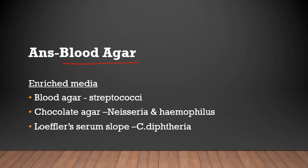Examples of enriched media are Blood agar, Chocolate agar, and Loffler's Serum Slope. Blood agar is commonly used for growing Streptococci. Chocolate agar is heated blood agar used for isolation of Neisseria and Haemophilus. Loffler's Serum Slope media is used for growing Corynebacterium diphtheriae.